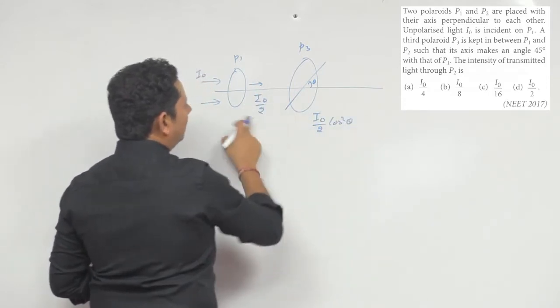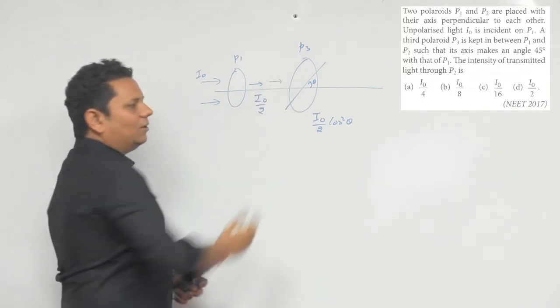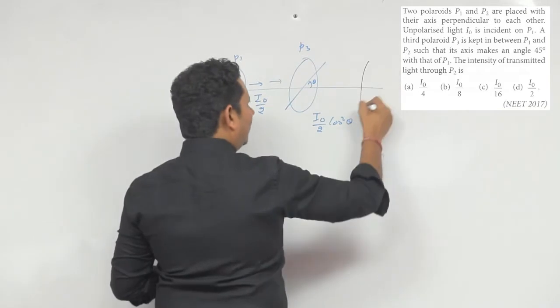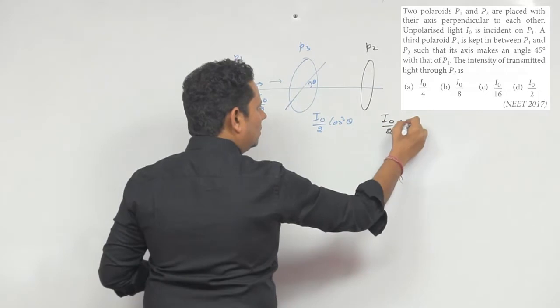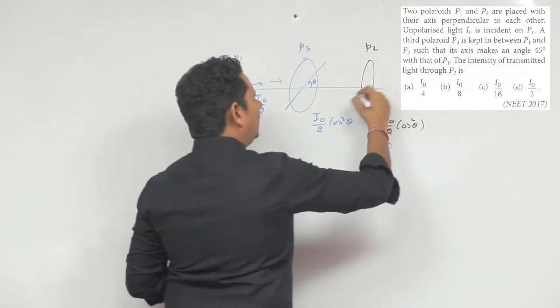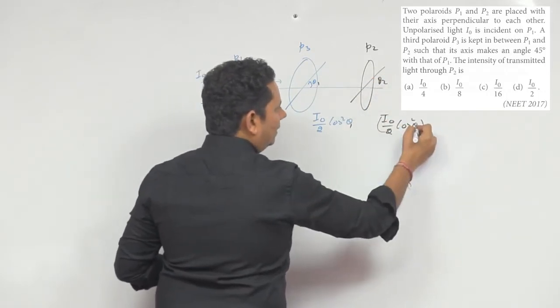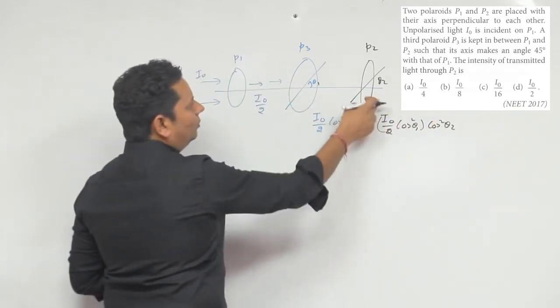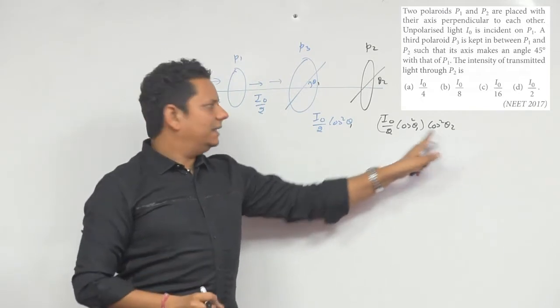Of course cos theta, aegi I not by 2 cos square theta. Uske baad agar ek aur polaroid aapke lagaya hai, to jo light aegi woh hogi I0 by 2 cos square theta. Yeh incident light thi multiplied by agar theta 1 hai, agar theta 2 hai, to isko theta 1 kehte hain, multiplied by cos square theta 2. Jo angle in dono ke beech ka angle hai uske cos square theta se multiply ho jaega.